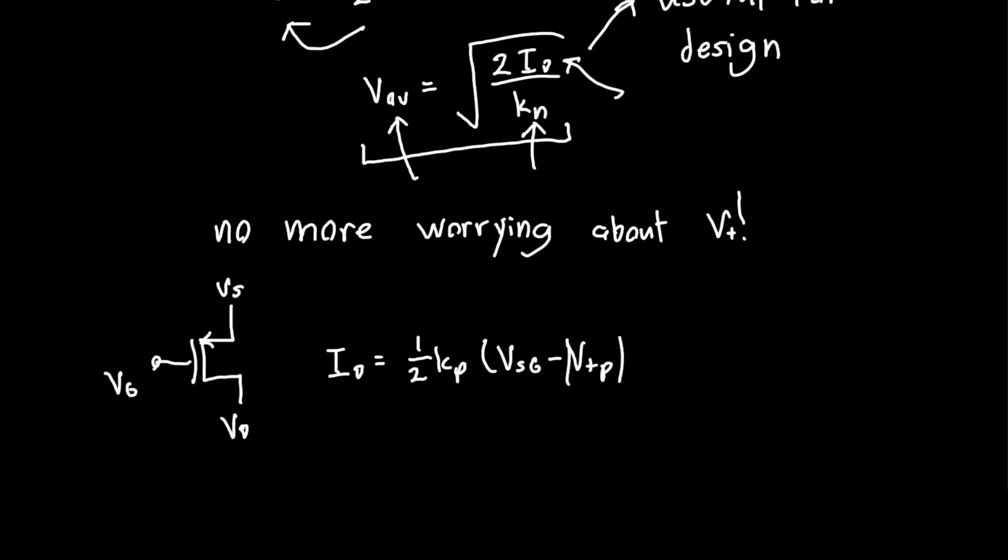Well, our drain current we know is just one half times Kp times Vsg minus the threshold voltage. I'm just going to put magnitude of the threshold voltage because some people still like to say that the threshold voltage is negative. In that case, this is the overdrive voltage.